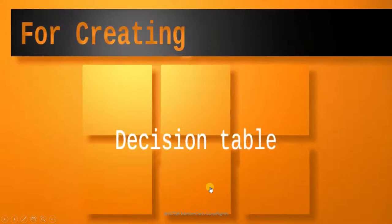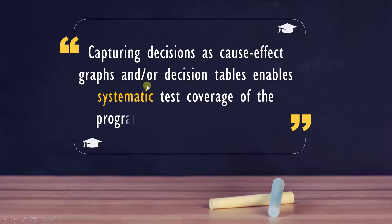And before we end this lecture, the last and important point is: capturing decisions as cause-effect graphs or decision tables enables systematic test coverage of the program's logic to be achieved. If you have a program logic which has a logical structure and if you draw a cause-effect graph out of it, then you can provide systematic test coverage because you are able to visualize it properly. You know which all combinations are there and for that you will write the test case. By doing that, you are providing systematic test coverage.